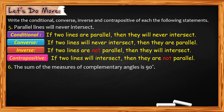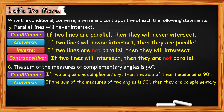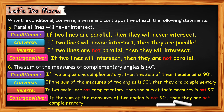For number 6: the sum of the measures of complementary angles is 90 degrees. For the conditional: if two angles are complementary, then the sum of their measures is 90 degrees. For the converse: if the sum of the measures of two angles is 90 degrees, then they are complementary. For the inverse: if two angles are not complementary, then the sum of their measures is not 90 degrees. For the contrapositive: if the sum of the measures of two angles is not 90 degrees, then they are not complementary.